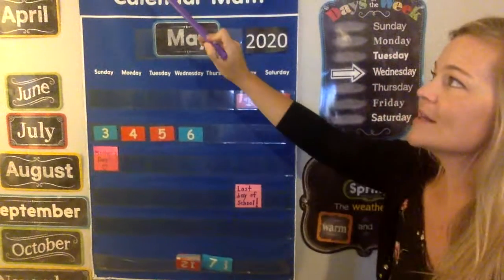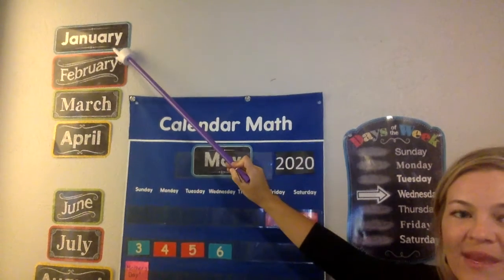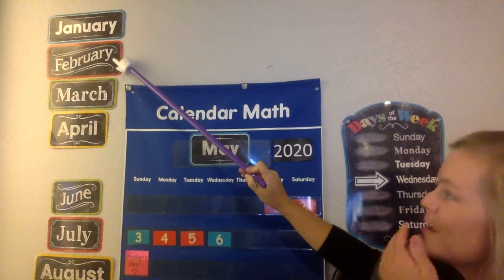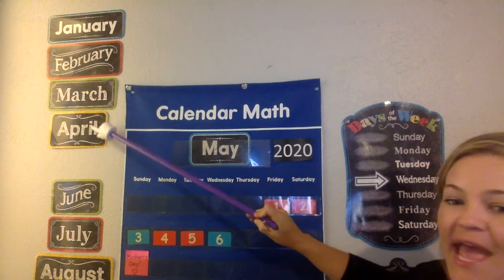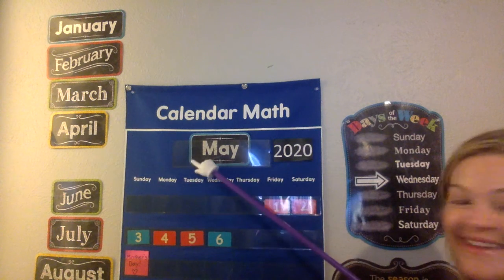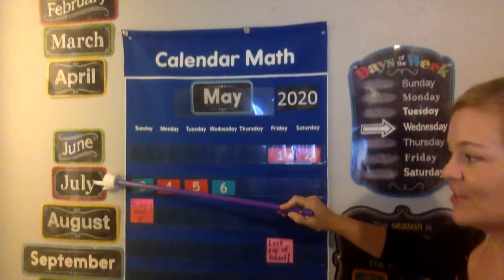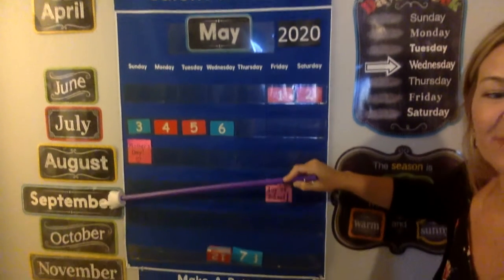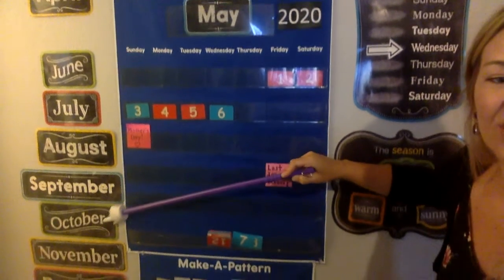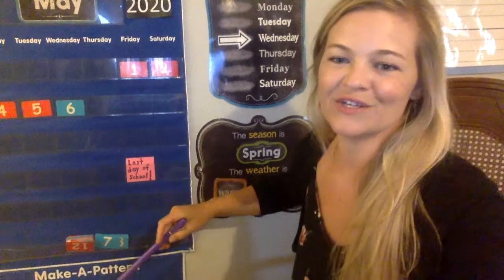And months of the year over here. We're going to start with the first month of the year: January, February, March, April, May — that's this month. Next month is June, July, August, September, October, November, and December — last month of the year, December.